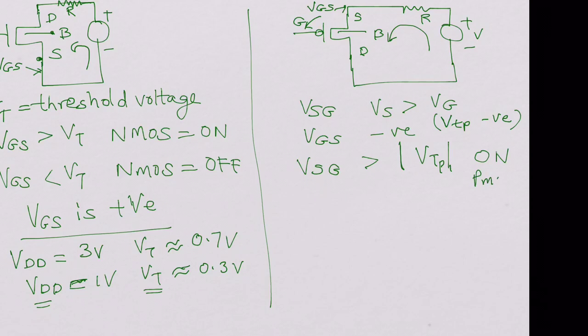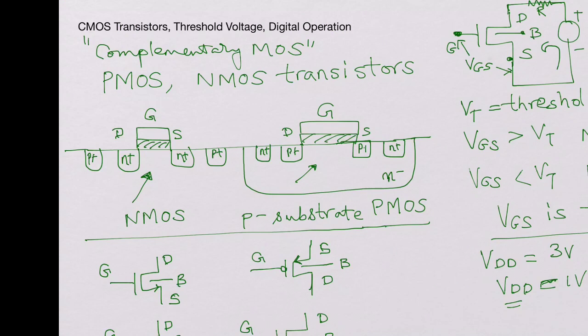And if VSG is less than the absolute value of VTP, threshold voltage of the PMOS device, then the PMOS is off. So in digital circuits, the way the MOS transistors are used, PMOS and NMOS are used like switches. They are either on or off.